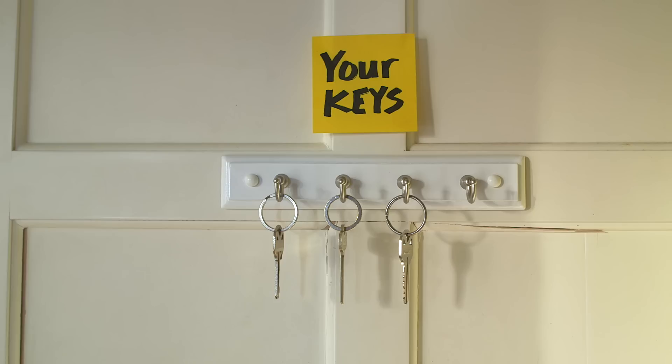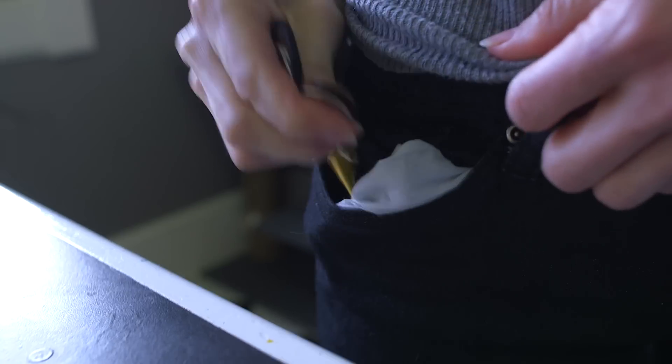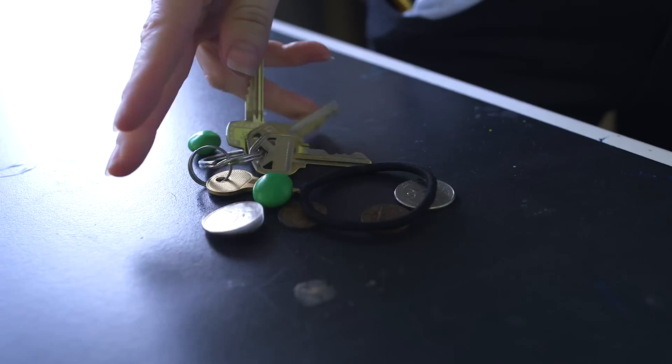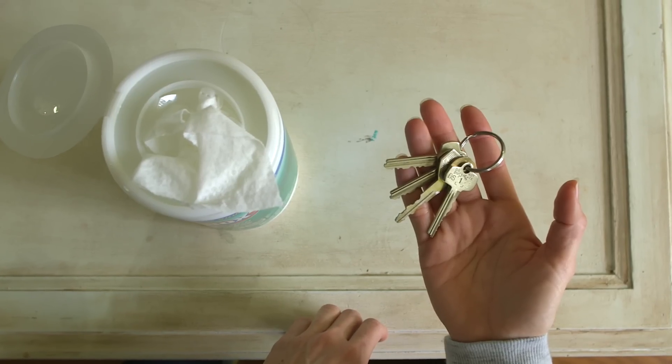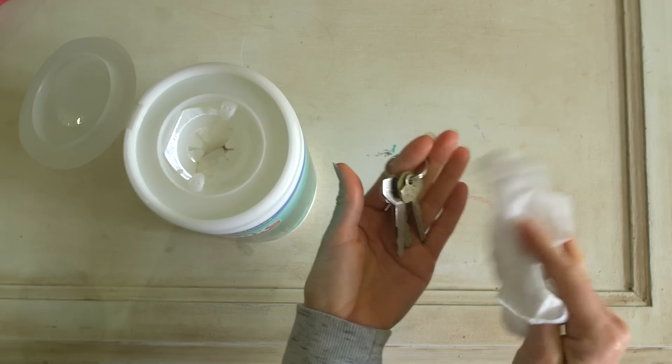Germy place number three, your keys. Jingling around with loose change in your pocket or purse, your keys have probably been accumulating bacteria for a long time. Every few days, try to remember to wipe your keys down with a cleaning solution.